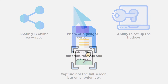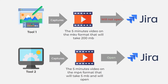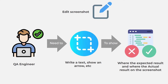If the additional functions are more or less clear, let's talk about why the essential functions are so important. For example, saving files in different formats and sizes: some tools might capture a 5-minute video in MKV format that takes 200MB and will not open in Jira, while another tool might capture the same 5 minutes in MP4 format that takes only 5MB and opens in Jira. Another example concerns editing photo screenshots — QA engineers very often need to write text, show arrows, etc., to indicate expected and actual results on a screenshot. Therefore, edit functions play a crucial role during screen capturing.